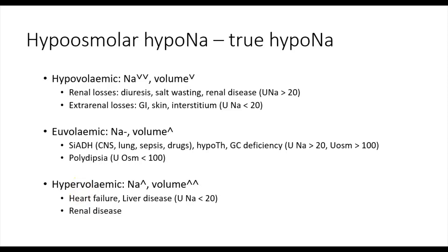That covers the treatment for the three subtypes of hypoosmolar hyponatremia, linking it to the underlying pathophysiology. Before we finish, it's important to note that when treating hyponatremia — particularly chronic hyponatremia — you want to ensure that you don't correct the sodium too quickly, because this increases the risk of pontine osmotic demyelination syndrome.